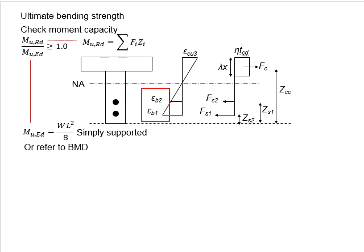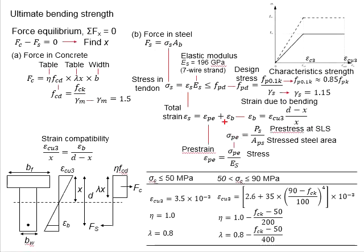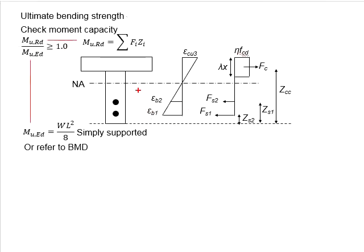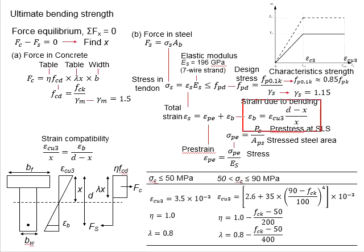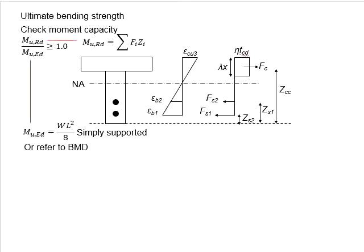Be careful, you cannot use this stress directly to compute the resultant force in the tendon. If the tendon here is a prestressing tendon, you will need to compute the total strain based on the equations given here. The epsilon B here is actually the strain due to bending. You need to consider the pre-strain in the prestressing tendon. In the case that the non-prestressing reinforcement bar is provided, no pre-strain will be involved and the bending strain can be used directly to compute the resultant force.